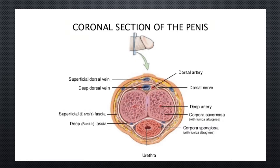Here is the coronal section of the penis — you can see a cross-sectional view. There is a superficial dorsal vein at the upper position, then the deep dorsal vein and the dorsal artery. During hormonal stimulation, blood flow from the whole body comes towards the penis via the dorsal artery and returns through the dorsal vein.